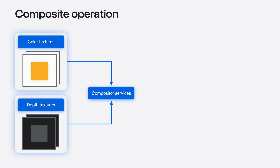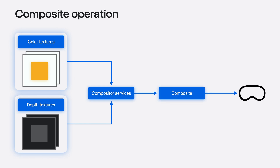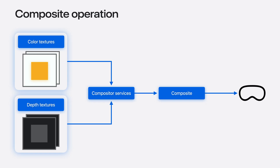Compositor Services uses both color and depth textures from the renderer for performing the compositing operation. It is worth noting that Compositor Services expects the depth texture to be in reverse Z convention. Renderer content for a given pixel will show up on display if it has an alpha channel larger than zero and a valid perspective depth value. To avoid a parallax effect, it is the renderer's responsibility to provide the correct depth value across all pixels. Also, for better system performance, the renderer should pass a zero depth value for any pixel that has a zero alpha value.